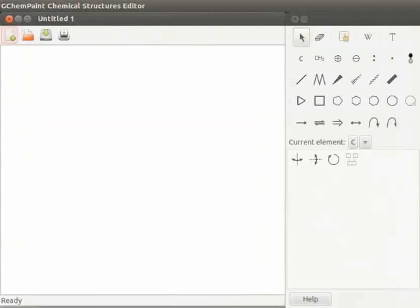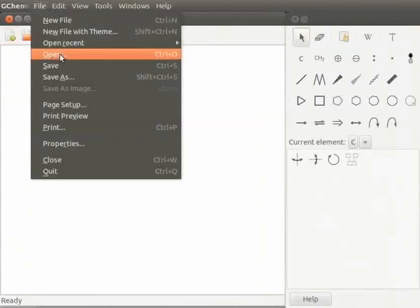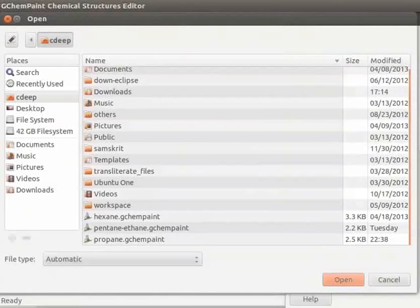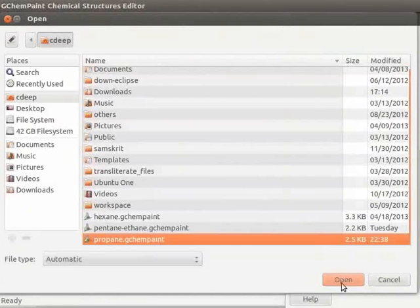Let us begin the tutorial by opening an existing file. Click on File menu, select Open and click on it. A window containing files and folders opens. From here, select file named Propane and click on Open to open the file.